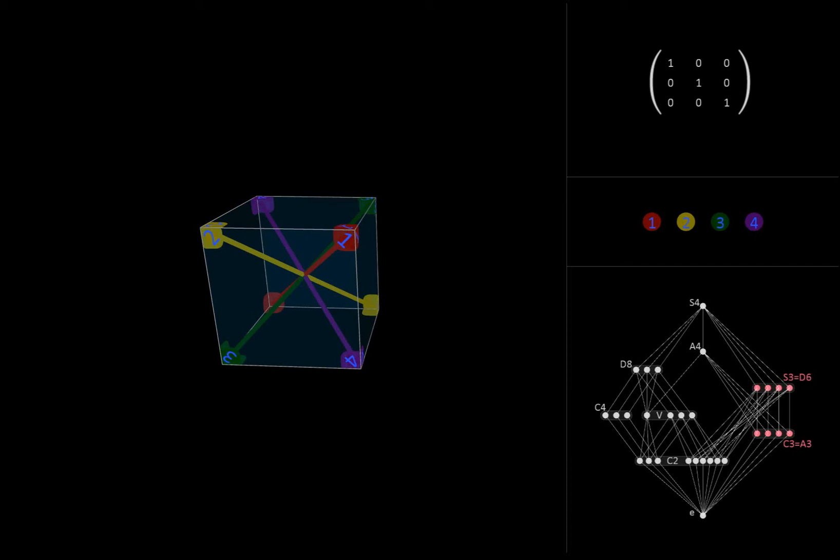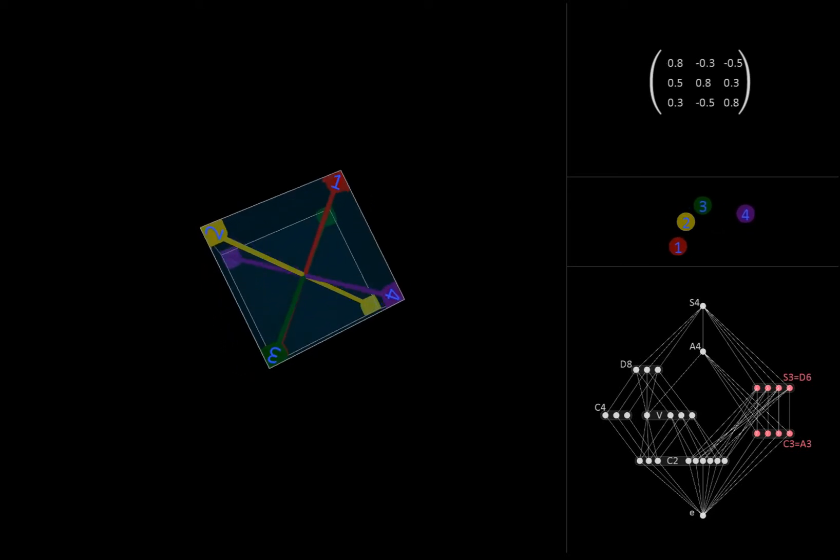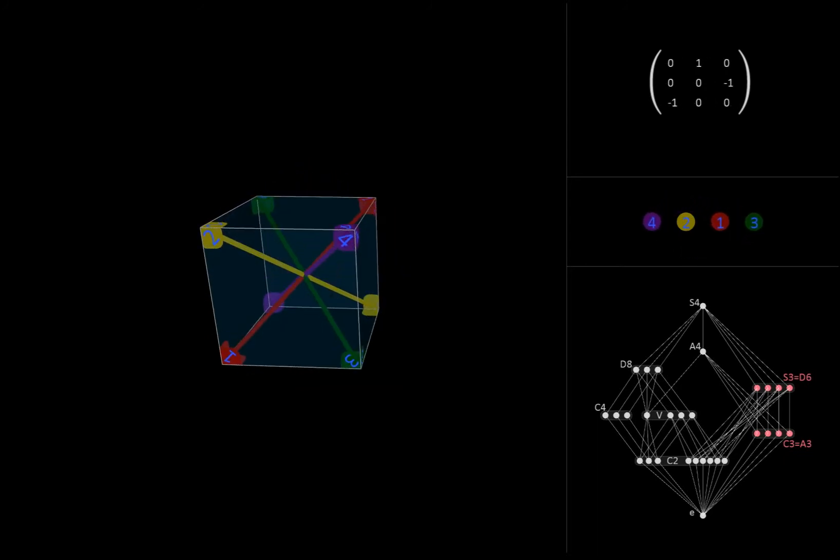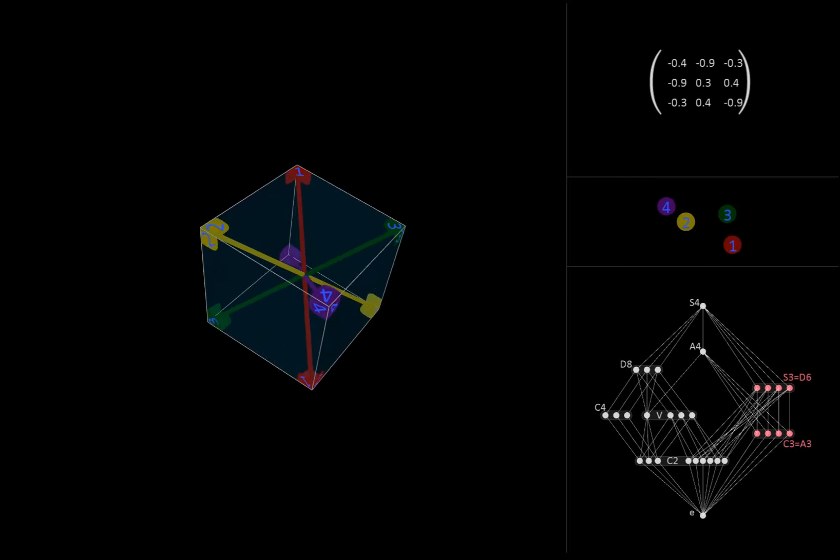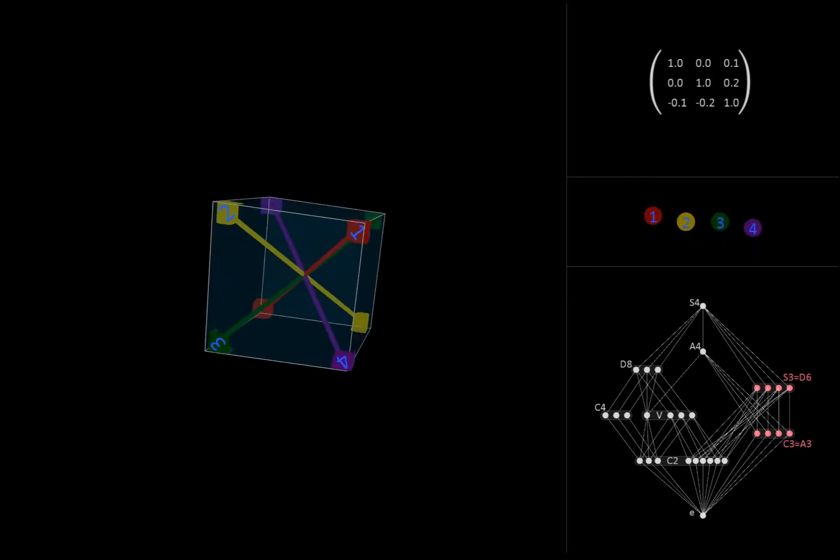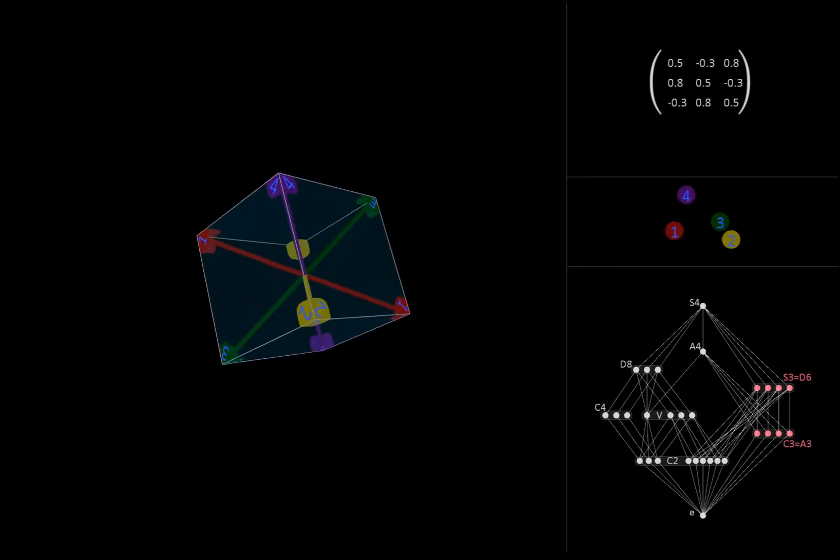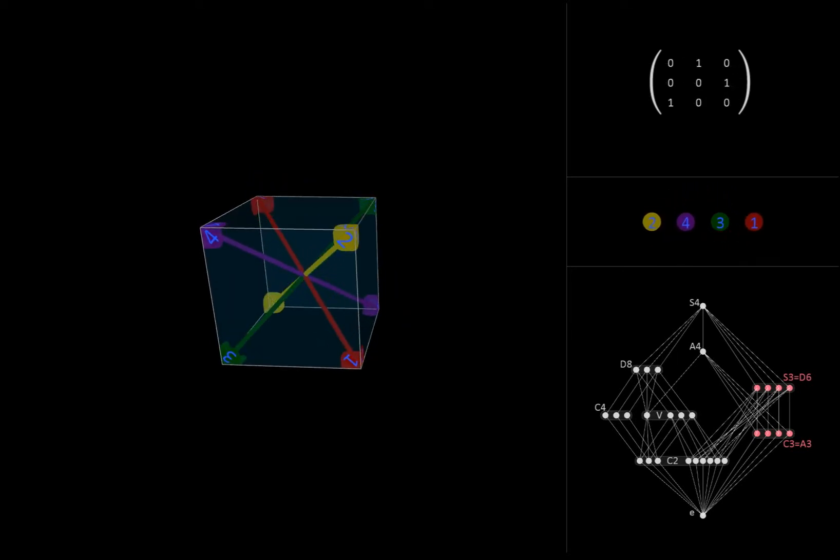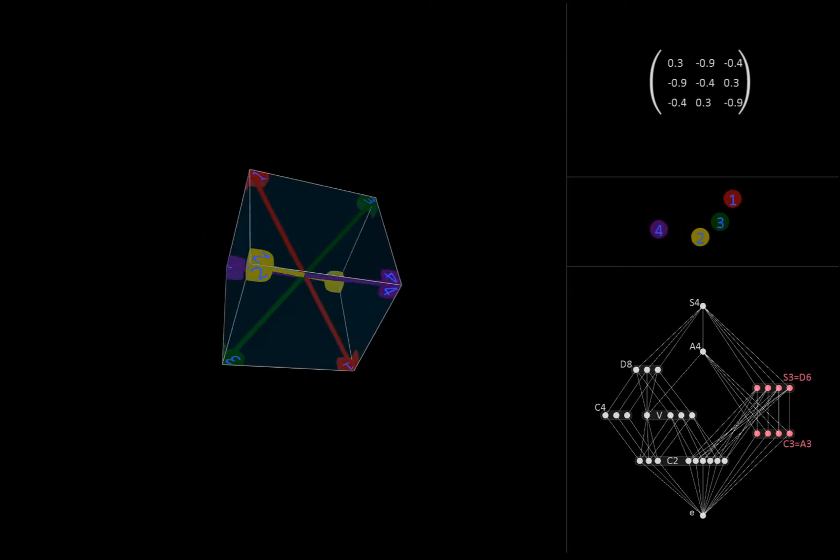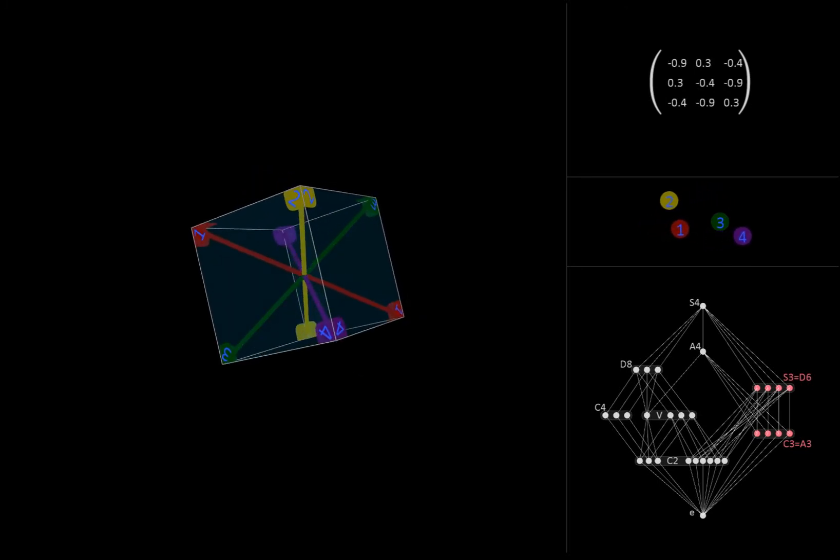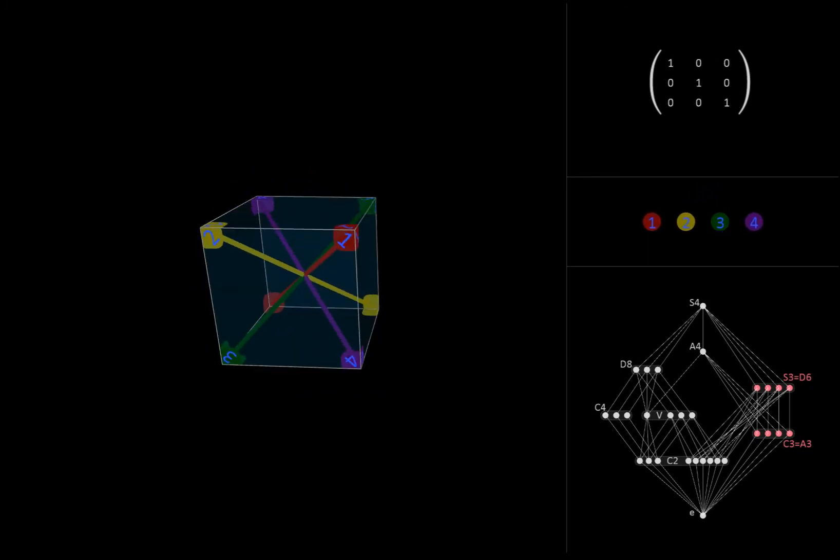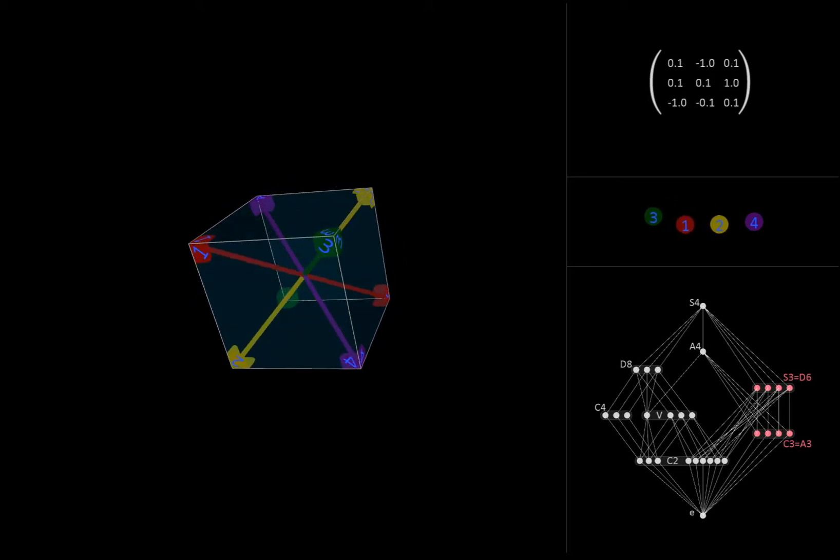Since we have four diagonals, we have four of these C3 subgroups and four corresponding D6 groups, each consisting of transformations that send a particular diagonal back to itself and permute the three others. Here is the D6 that fixes the second diagonal. And here is the one that fixes the third. And here is the last one that fixes the fourth.